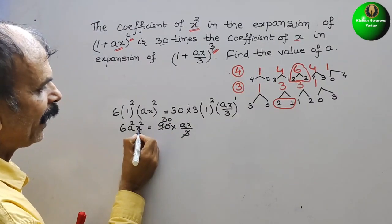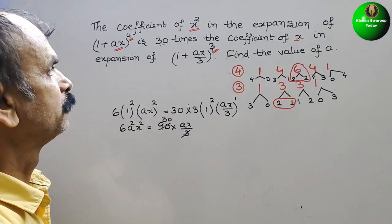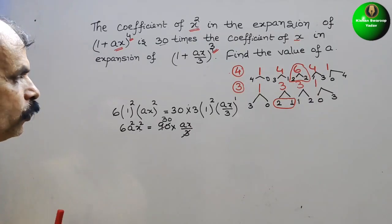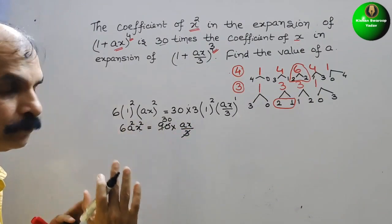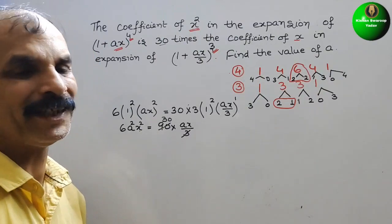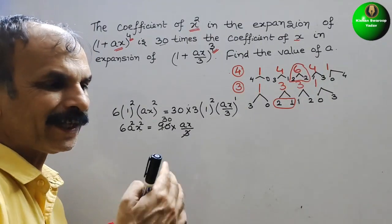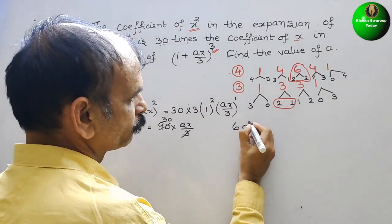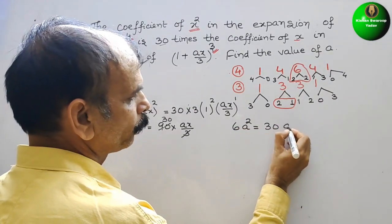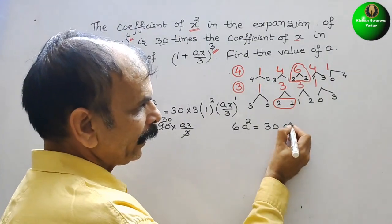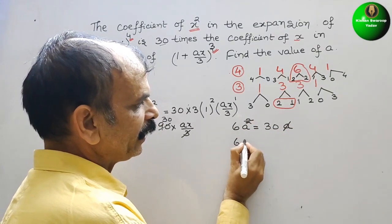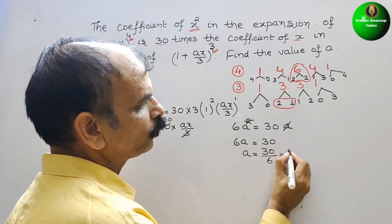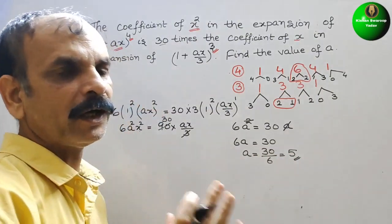Now we can see x² here and x here. Taking only the coefficients, it will be 6a² = 30a. So a and a² — cancel one a — giving 6a = 30. Therefore, a = 30/6, which equals 5. So the value of a is 5 for this equation.